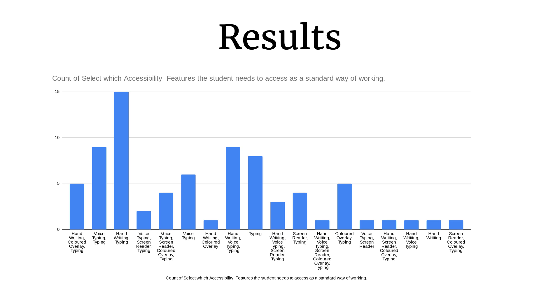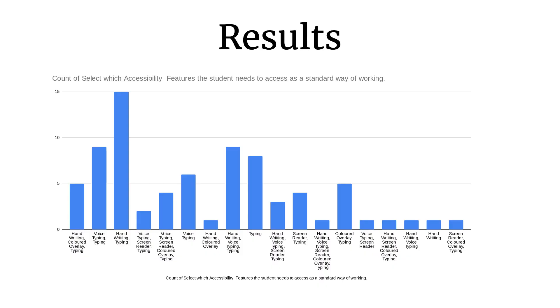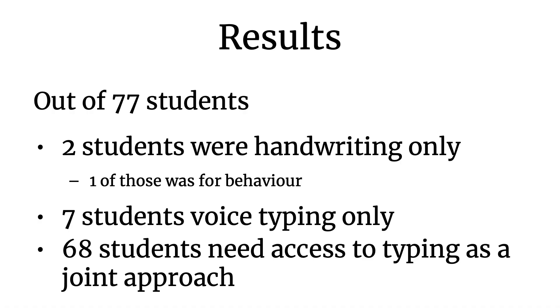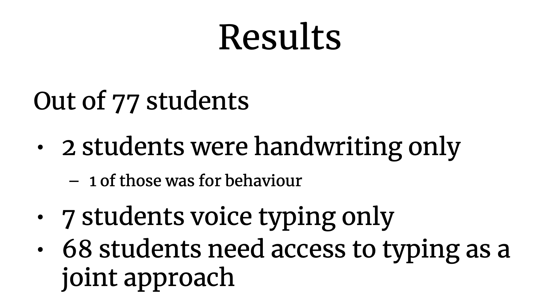We did this across the school and got results that show how personalised we can make this system. With mixtures of handwriting, typing, coloured overlays, and voice typing, we had a massive range. Out of 77 students at the time, only two used handwriting as their primary way of working — and for one of those it was due to behaviour. Seven students were on voice typing only as their standard way of working, and we helped put a system around them to use it more effectively.